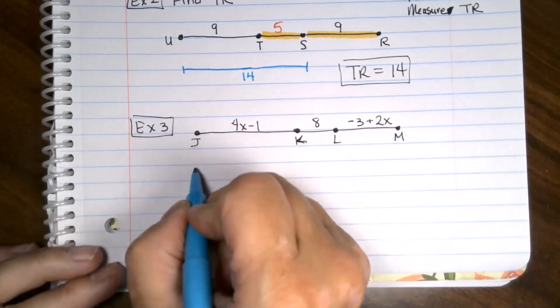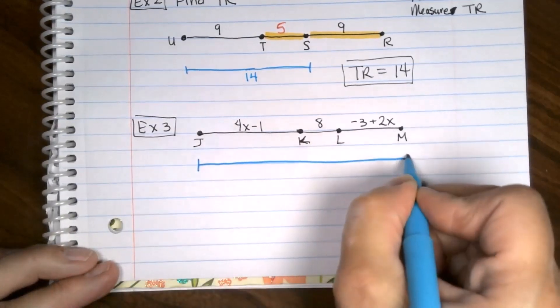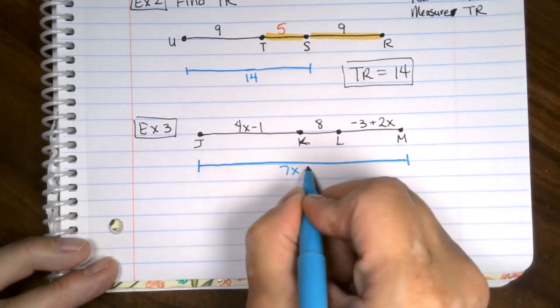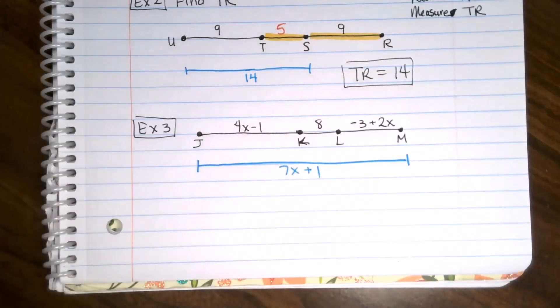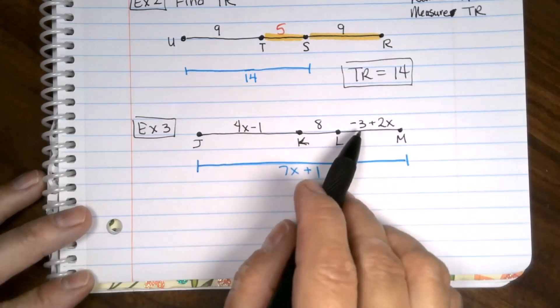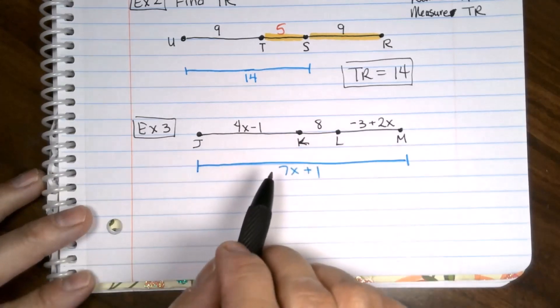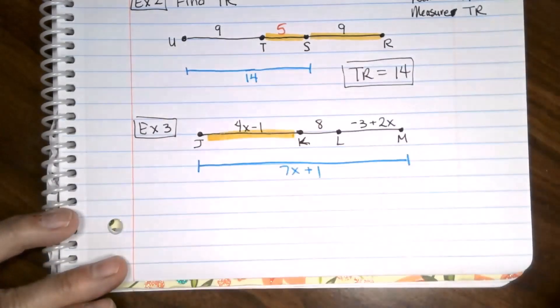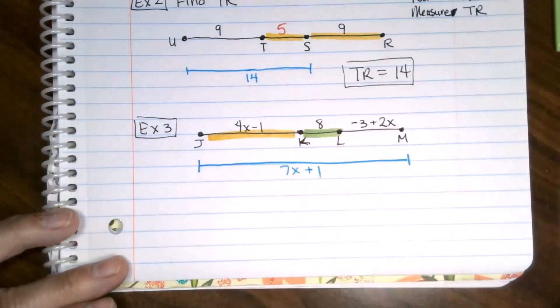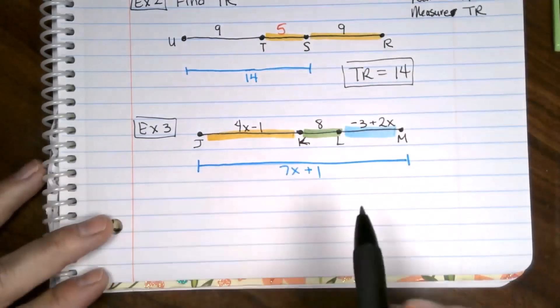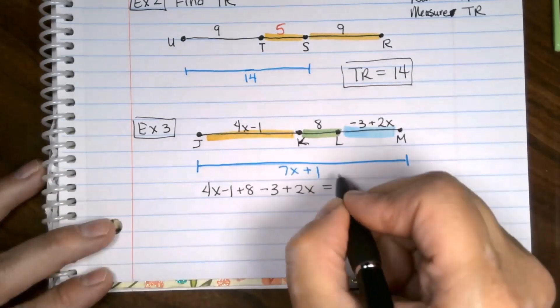And we are given that the length of the entire thing equals seven X plus one. We have to use what we know. Segment addition postulate. You add up all the little things and set them equal to the total. So that means the four X minus one plus the eight plus the negative three plus two X has to equal this. So I am going to take each one of these chunks, add them together, combine like terms, do some algebra stuff on it. But it equals this thing, the seven X plus one.